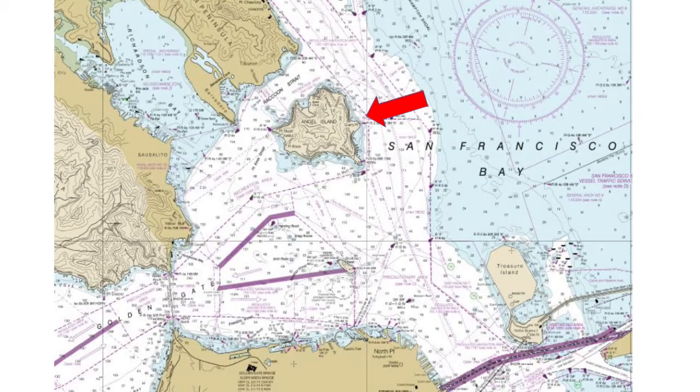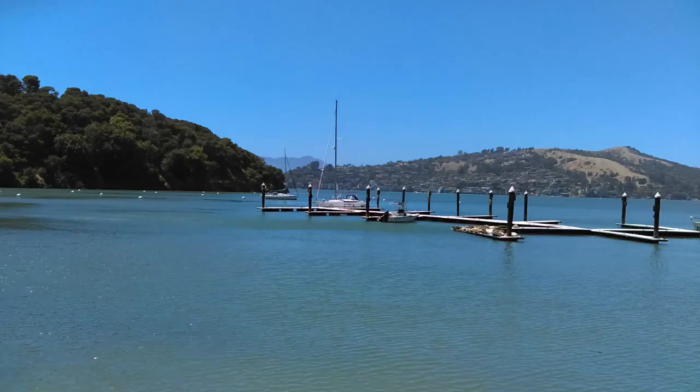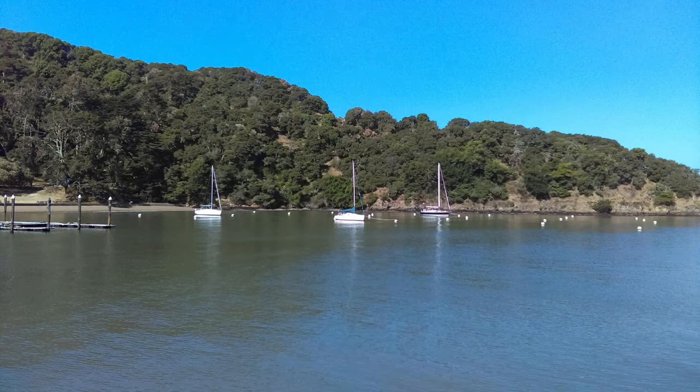Hi, this is Jim. Angel Island is this wonderful state park at the north end of San Francisco Bay, and it's ideal for boaters because you can only reach it by boat. There are slips you can rent for day use and also moorings if you want to spend overnight.